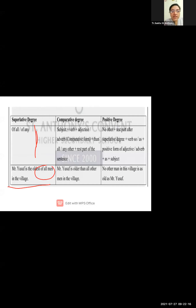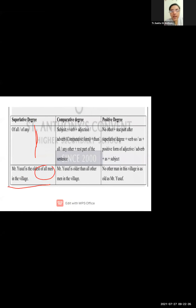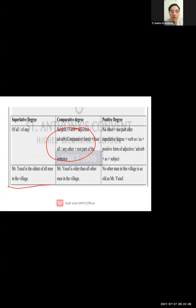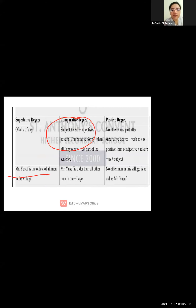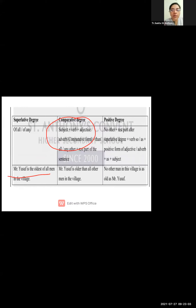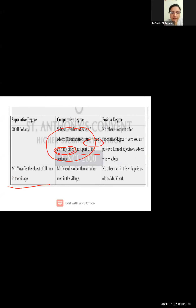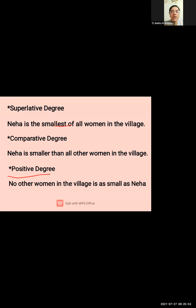Mr. Yusuf is the oldest of all men in the village. Now, if 'of all' appears in a superlative sentence, we have to convert it into a comparative degree and into a positive degree. Here is the formula you have to keep in mind: subject plus verb, then the adjective or adverb converted into comparative form, plus 'than all other' followed by the rest of the sentence.